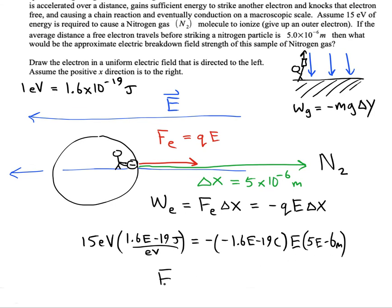After solving, we get 3 million newtons per coulomb.